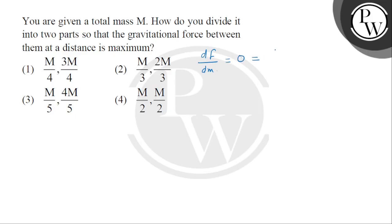So, this answer will come. We'll have GM divided by capital M divided by r square minus 2 GM divided by r square equals to 2 GM divided by r square.